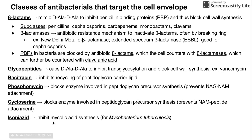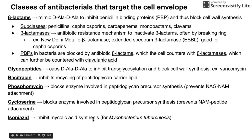This next class of antibacterial targets the cell envelope like the rest, but is specific to TB — Mycobacterium tuberculosis. It specifically inhibits mycolic acid synthesis. Mycolic acid is a waxy component very characteristic of the tuberculosis species. Isoniazid prevents that kind of synthesis.